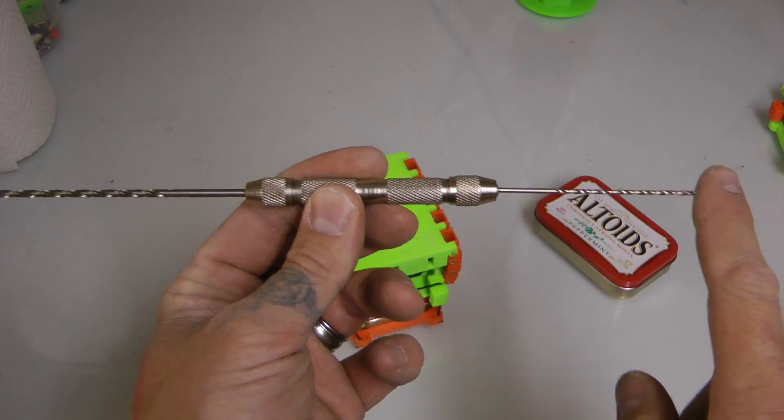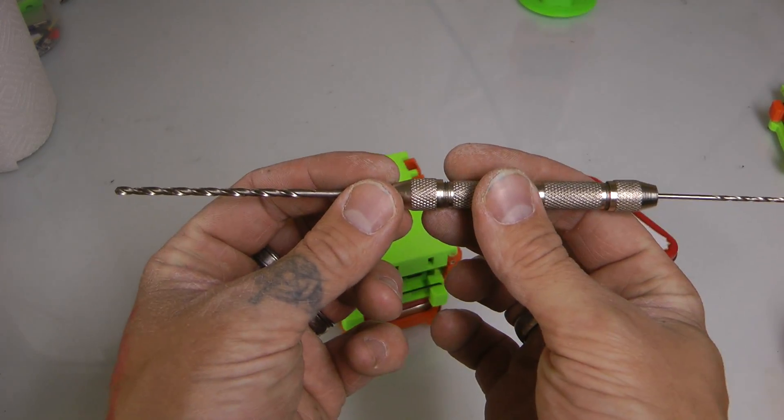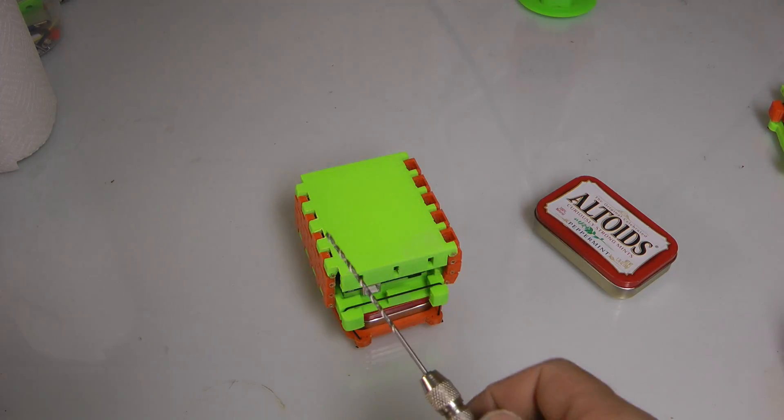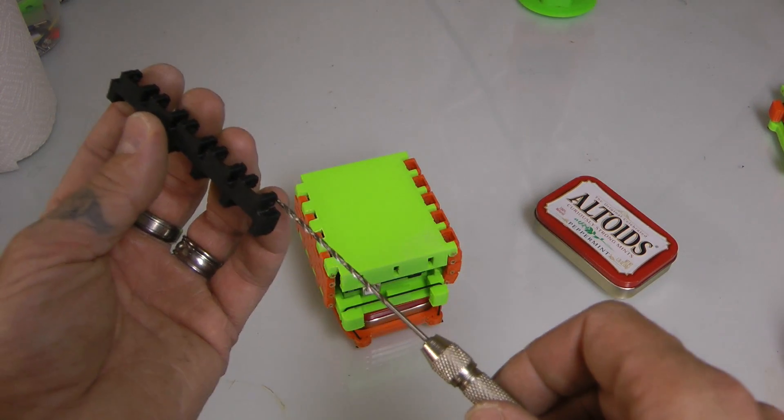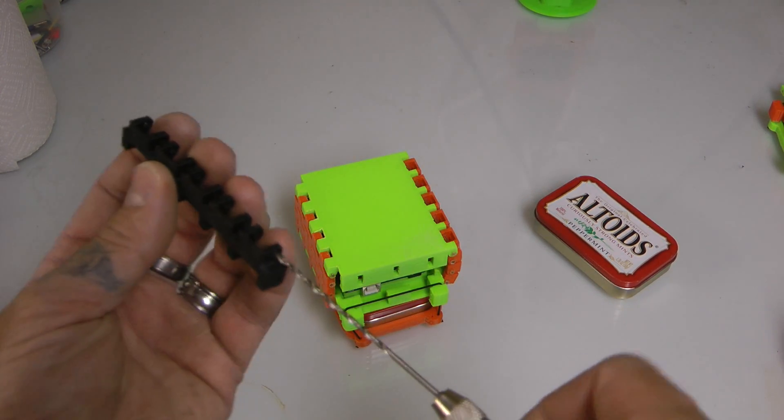The bits are 1/16th on this end and 3 millimeters on this end. And you can go all the way just about through one of these tracks to clean out the filament track.